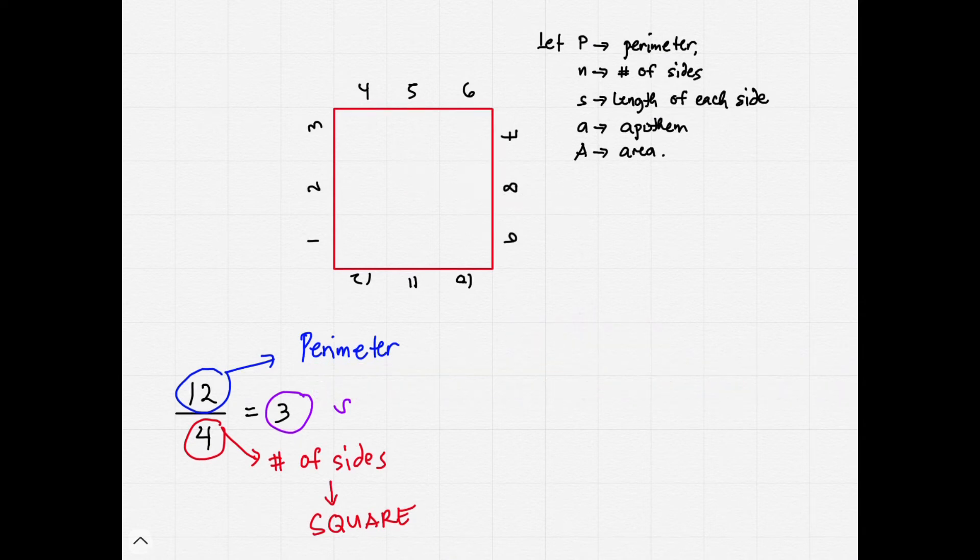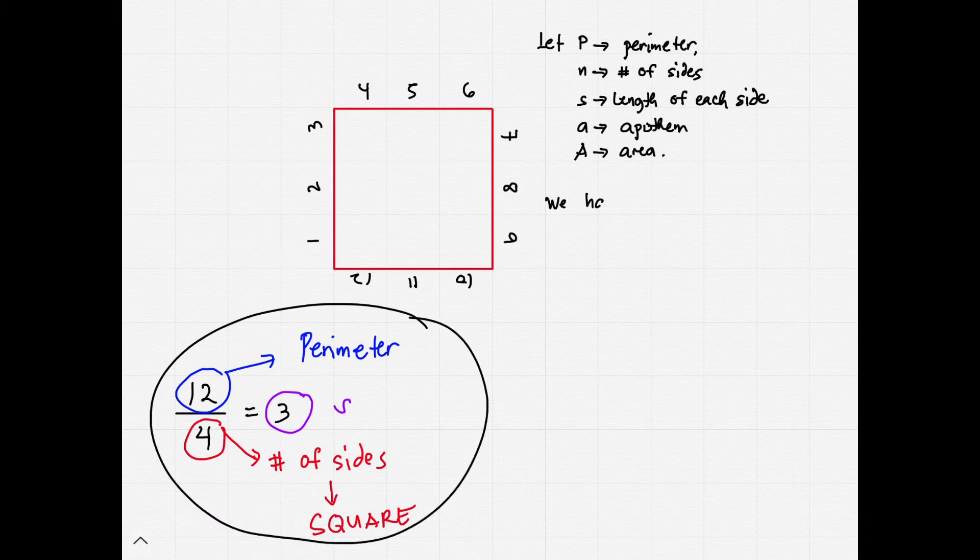So for visual learners, let's have the labels. For us to know the length of the side of this polygon, that would be S in this case, we have to divide perimeter, that's P, by the number of sides, which is N.